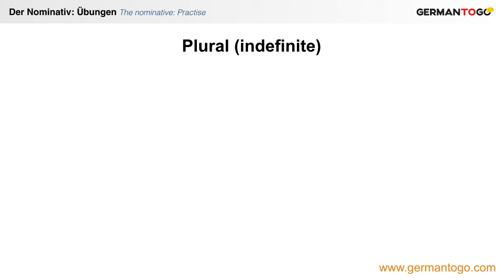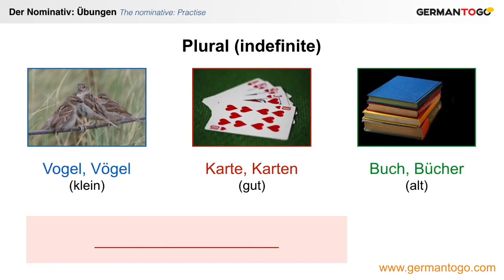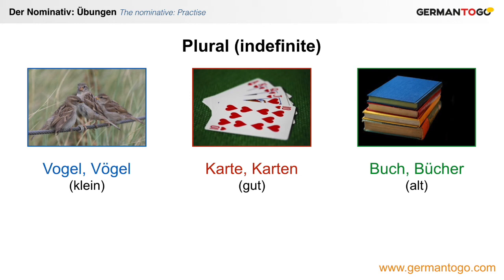And now the indefinite plural forms, again with the same nouns. How do you say small birds? Kleine Vögel. And good cards? Gute Karten. And old books? Alte Bücher. Just like in English, you have no article for the indefinite plural, and the adjective takes the ending -e.